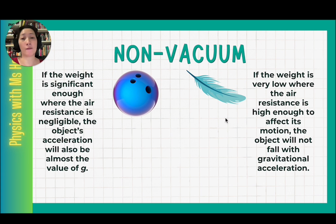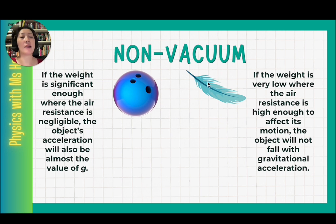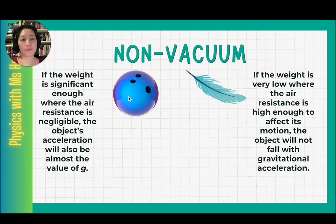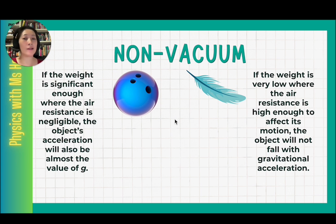For example, objects like feathers, a piece of paper, or a plastic bag — where the surface area is large enough to create high air resistance and the weight is not high enough to overcome it — will fall at a different acceleration from gravitational acceleration. Note that we are referring to a short drop. If dropped from a significant height, even heavy objects show slightly different motion. To find out more about that — the motion of a skydiver falling from great height — please watch my video on free fall and terminal velocity, linked in the description.